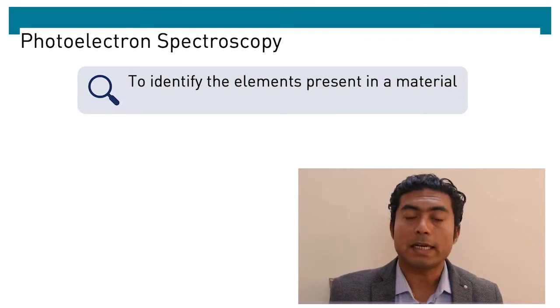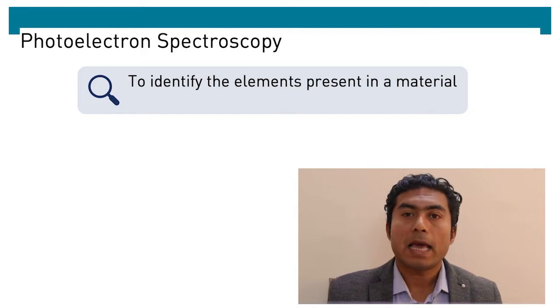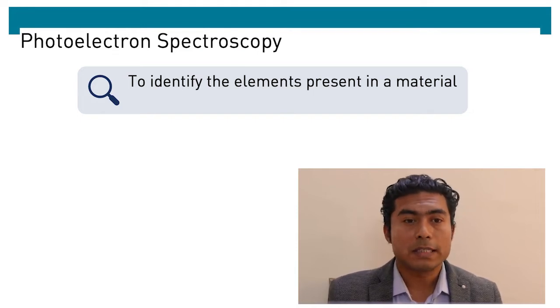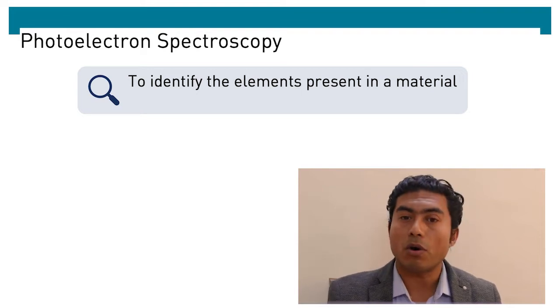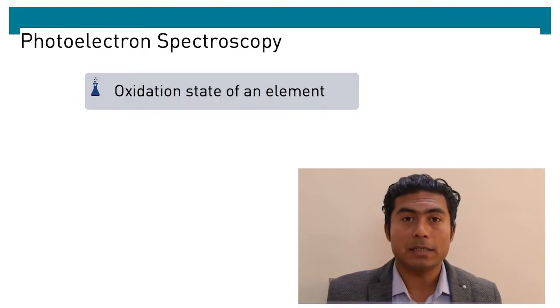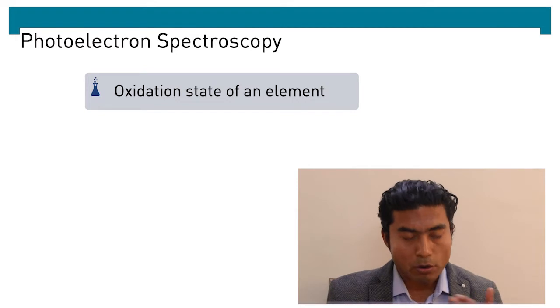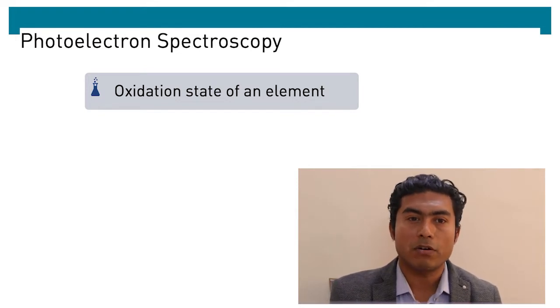We can mainly use this technique to identify the elements present in a material. A material may be composed of single or many elements: carbon, nitrogen, oxygen, sodium, chlorine, gold, could be any element. We can also detect the oxidation state or electronic state of the element.